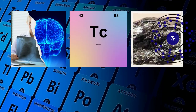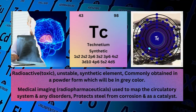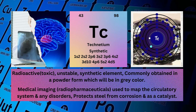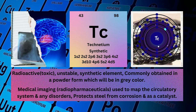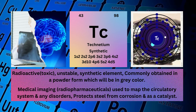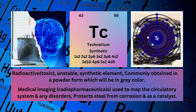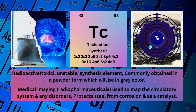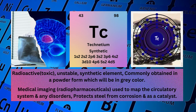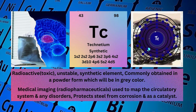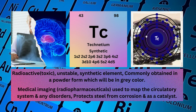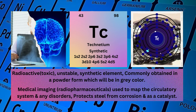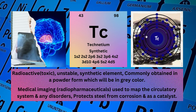Technetium. Atomic number 43. Mass number 98. Symbol: Tc. State: solid. Electronic configuration: 1s² 2s² 2p⁶ 3s² 3p⁶ 4s² 3d¹⁰ 4p⁶ 5s² 4d⁵.